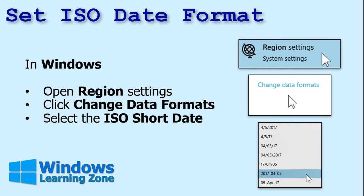So how do you set the ISO date format? It's in Windows, under the regional settings. In Windows 10 — and I'm pretty sure in 7 and 8 as well — you go to regional settings, change data formats, and then go to ISO short date. I haven't upgraded to Windows 11 yet.